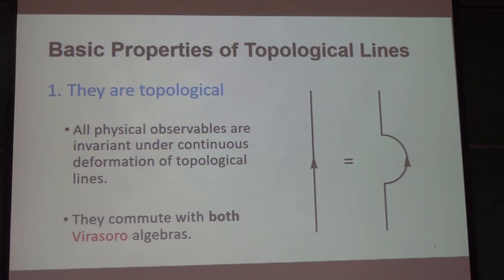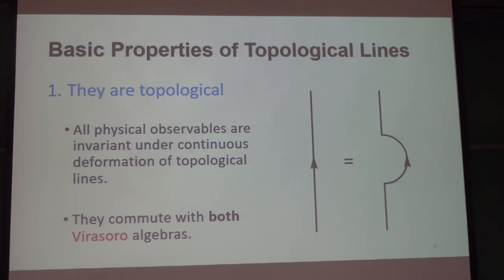I'll start with some basic properties of topological lines. The very first property is that they are homotopy invariant. Namely, if I deform the line a little bit without passing through any local operator, then all physical observables should be invariant. When you say physical observables, for symmetries we know what that means for S-matrices — what is the statement in this case?